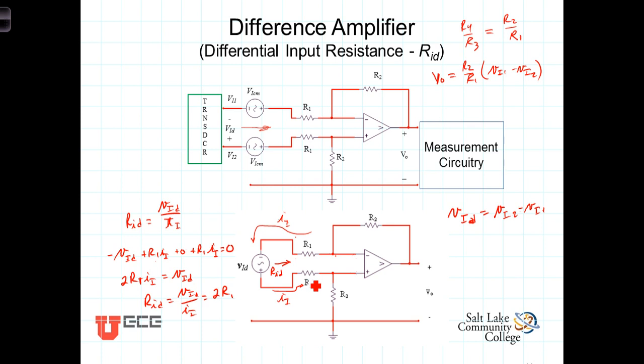This is admittedly a weakness of this stand-alone difference amplifier that we'll address with modifications to this amplifier to create what is known as the instrumentation amplifier. But for now the take-home message is that the input resistance of the difference amplifier is simply equal to 2 times the R1 value.